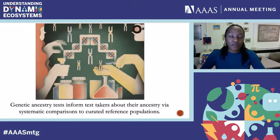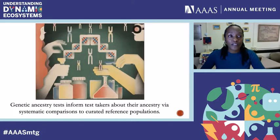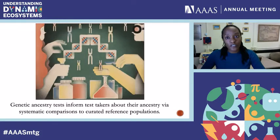With genetic ancestry testing, these tests tell test takers about their biological origins, effectively linking test takers to reference populations of known ancestry. What ends up happening when a person takes a genetic ancestry test is that their DNA is compared to the DNA of people of known ancestry, and then using statistical methods, the relationship between the test taker and the reference group is made, and this value becomes that ancestry estimate. These types of tests are known as autosomal ancestry tests and are useful for getting a generalized picture of a person's ancestry.